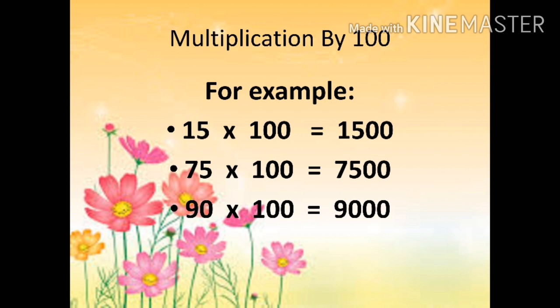Here we are having three zeros. Why? Because in 100 we are having two zeros and in 90 we are having one zero. So in this we will keep 90 as it is and then put two zeros, and it becomes 9000.